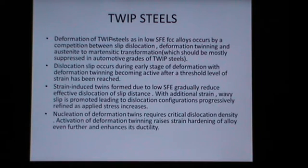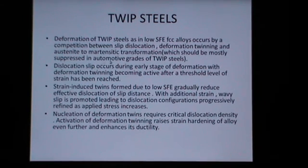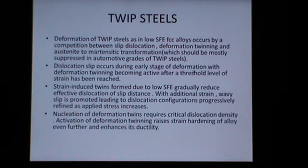Deformation of TWIP Steels, as in low SFE FCC alloys, occurs by a competition between slip dislocation, deformation twinning, and austenite to martensitic transformation, which should be mostly suppressed in automotive grades of TWIP Steels. Dislocation slip occurs during early stages of deformation, with deformation twinning becoming active after a threshold level of strain has been reached.